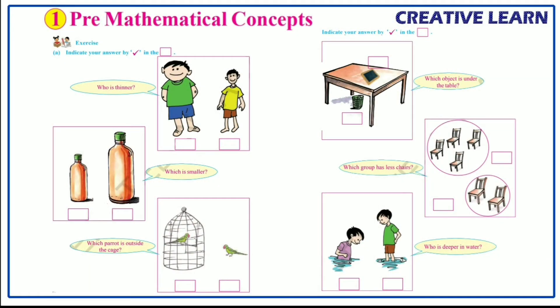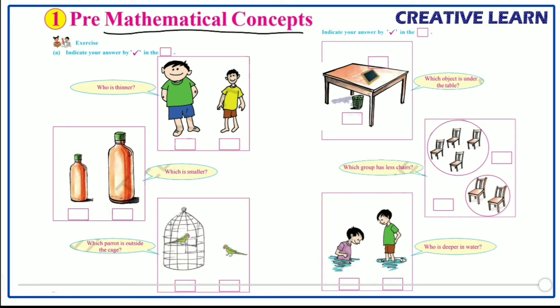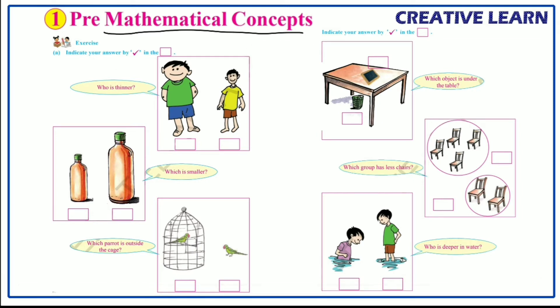Welcome to the CreativeLearn channel. Here we have an exercise as part of three mathematical concepts. Some pictures are given along with questions related to these pictures, and we have to mark the right answer in the right box. The first picture shows two boys.